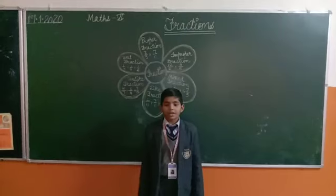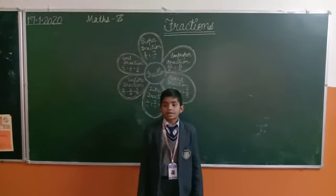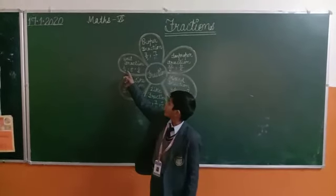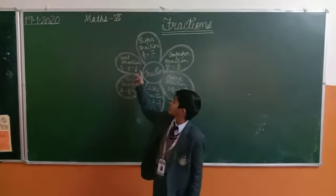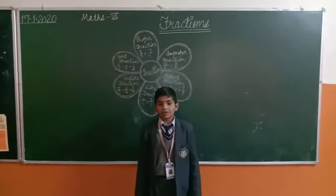Unit fraction: the fraction having numerator 1 is called a unit fraction. Example: 1 upon 4, 1 upon 6, 1 upon 5. Thank you, Prince, and have a nice day.